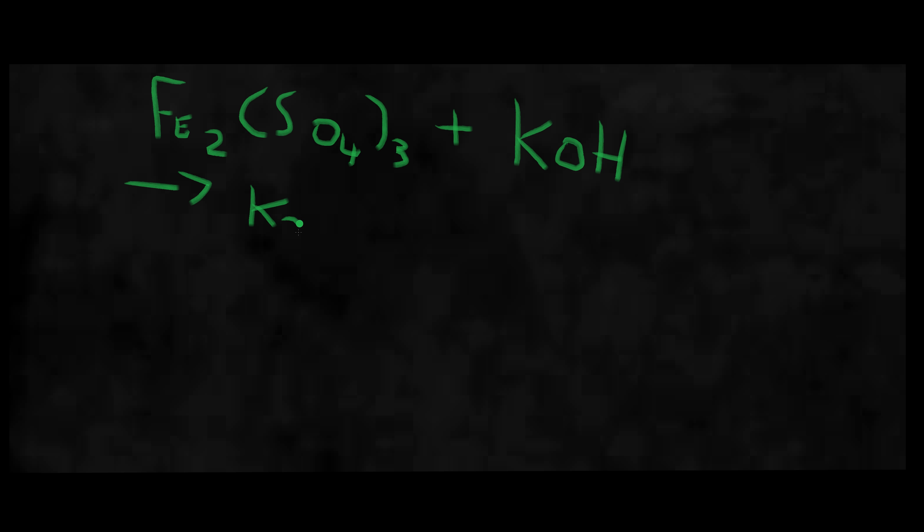We're going to do the whole thing algebraically, using simultaneous equations. First step, put a different letter by each term to signify an unknown quantity.